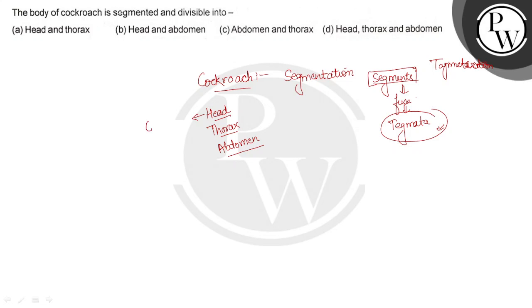Head is formed by the fusion of six segments. Thorax is formed by three segments and abdomen is having ten segments. Ten segments together form the abdomen, three segments form thorax and six segments form the head.